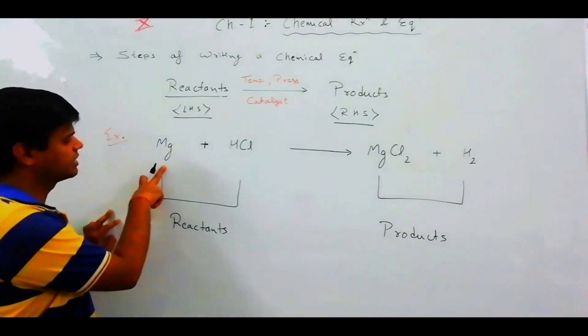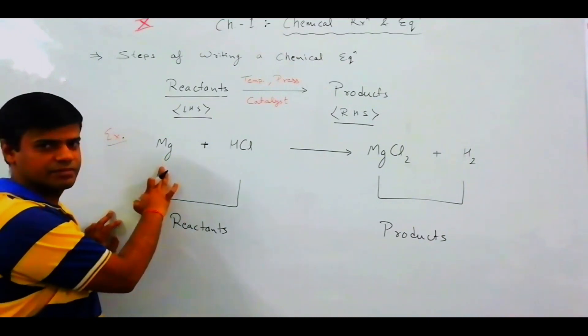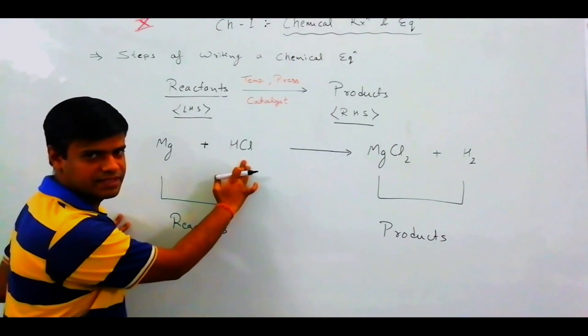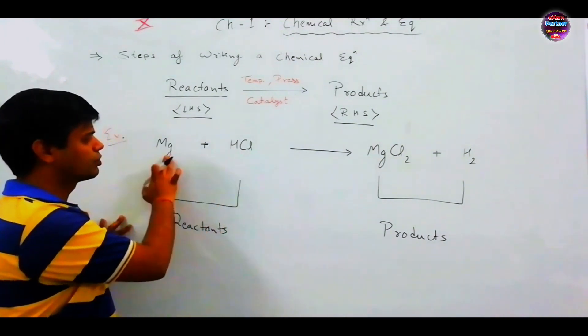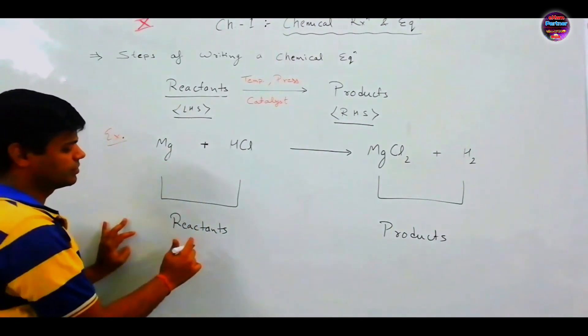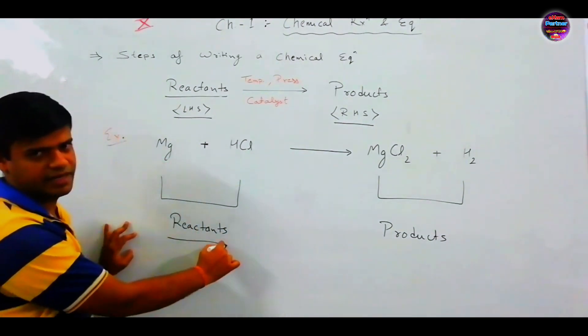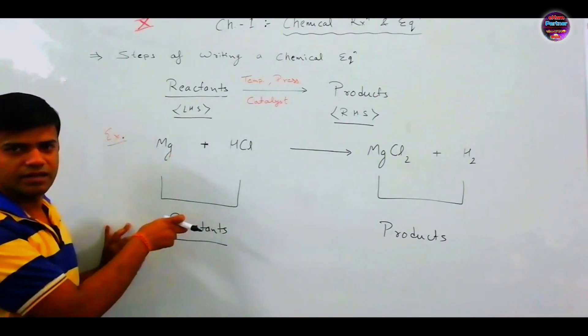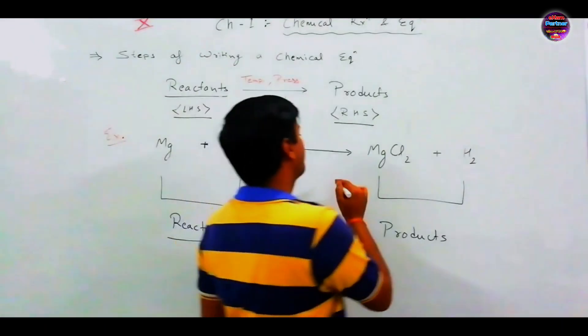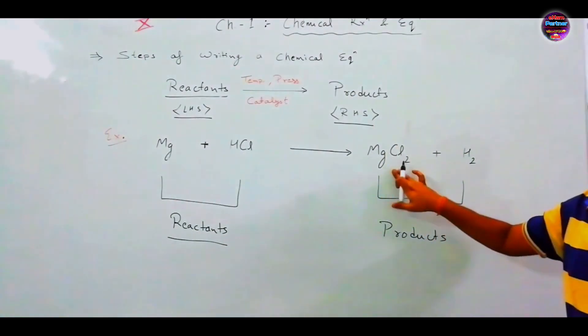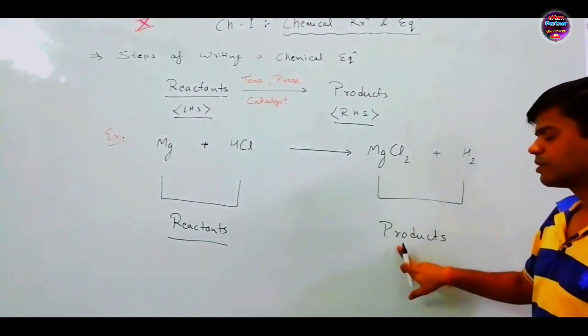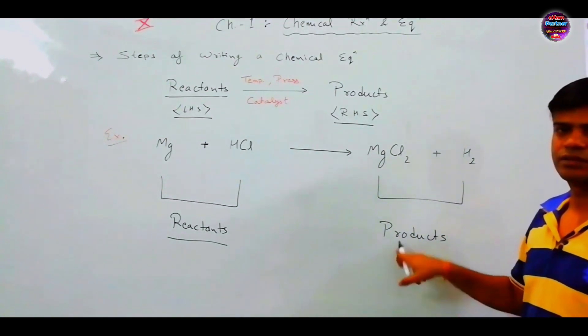Let's take an example. First, magnesium. We have two reactants. Magnesium and HCl, Hydrogen Chloride. Both of them are on positive side. We have two reactants. After reaction, what happens? Magnesium Chloride and Hydrogen. And the products. Because we are talking about reaction.